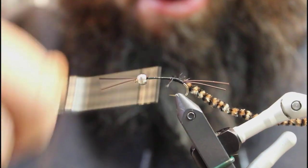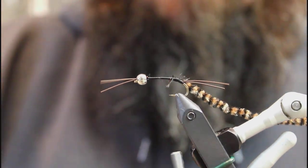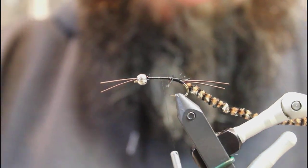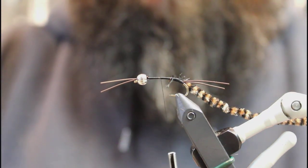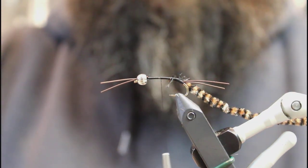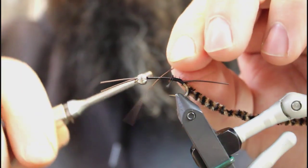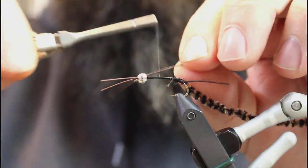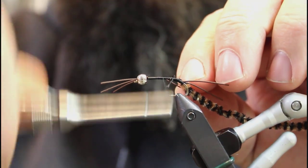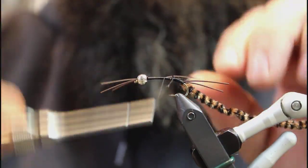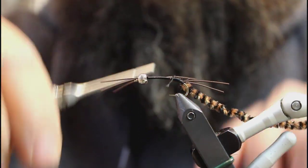We're going to go about halfway up the hook here. I'm going to tie in our legs here. I just kind of pre-cut all these and pull them apart so they're all ready to go. I'm going to put this on the side. I'll put one leg on each side so one piece of rubber legging actually forms two legs.